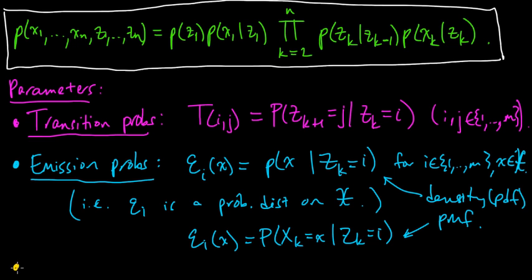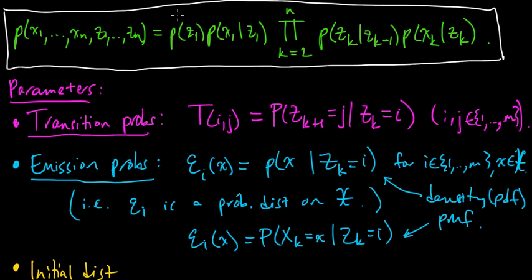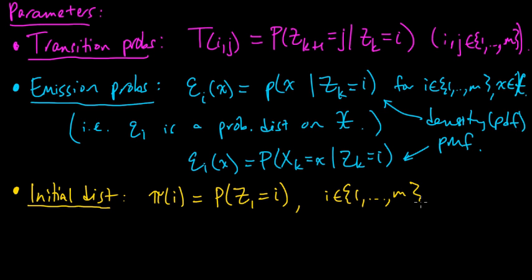And there's one more set of parameters that we must choose: the initial distribution. So far we've done these guys, these guys, and these guys, and we just need to do this guy. So you need to choose an initial distribution. Let's call it pi of i. This is a convention. People often use pi for the initial distribution. And that's the probability that Z1 equals the value i. And this has to be a PMF over the values 1 to M.